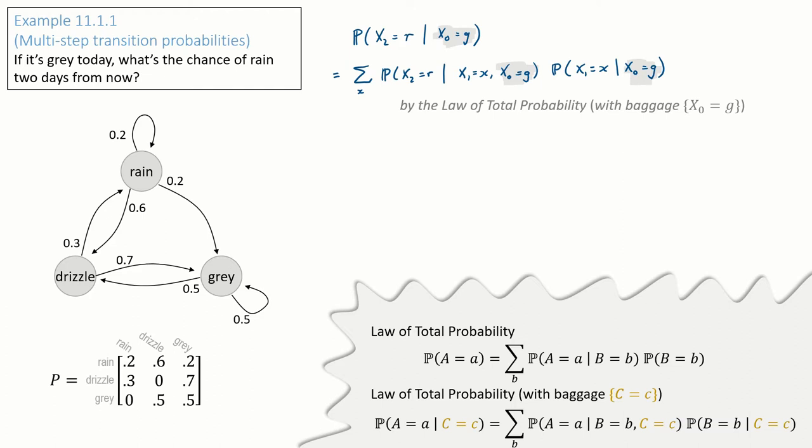The first form is for calculating a plain probability, the probability that a random variable big A takes value little a, by conditioning on all the ways this event might happen, and all the values of some unknown random variable b. The second form is for calculating a conditional probability. We can condition on b just like before, and all we do is carry this baggage, the condition big C equals little c, we carry it around with us in each of the terms.